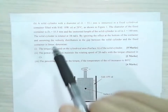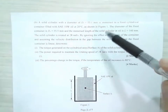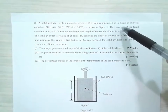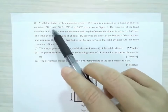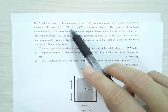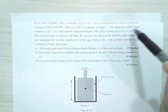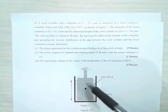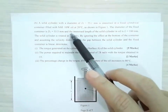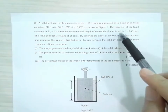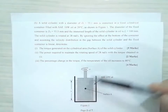In this question, a solid cylinder with a diameter di of 55.1 mm is immersed in a fixed cylindrical container. The container is filled with SAE 10W oil at 20 degrees C, as shown. The diameter of the fixed container is 55.5 mm. The immersed length of the solid cylinder in the oil is L = 160 mm.